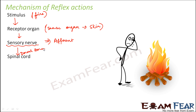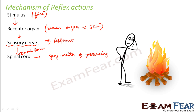Inside the spinal cord, the impulse then reaches the gray matter. In the gray matter, the processing of sensory information takes place, because a lot of interneurons are present in the gray matter. So all types of processing will take place there.